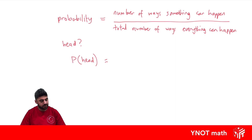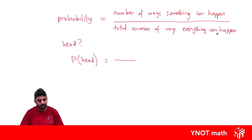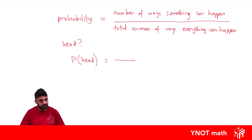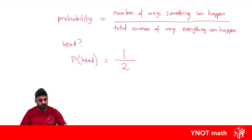What is the probability of getting a head using our definition? It's sometimes easy to start with the denominator — the total number of ways everything can happen. When we flip a coin, we can get a head or a tail, so that's two options for our denominator. If we want a head, only one of those options is a head. So the probability of getting a head is one out of two.